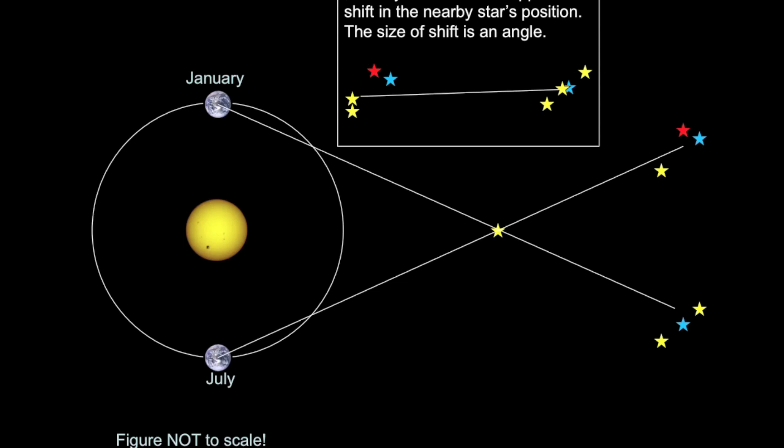Well, let's go back to our example of the nearby star that we're observing over the course of a year. In one year we see an apparent shift in the star's position. The size of that shift is an angle.